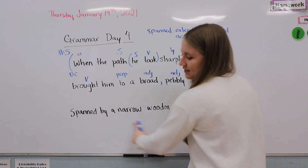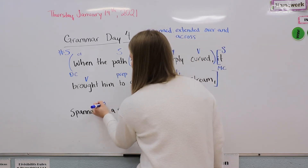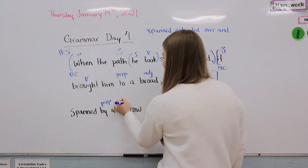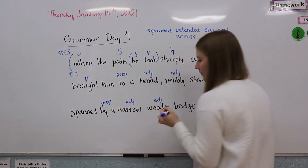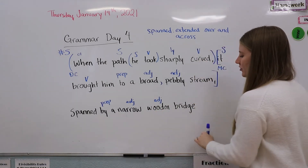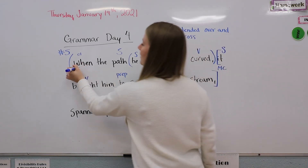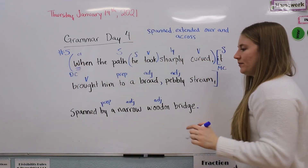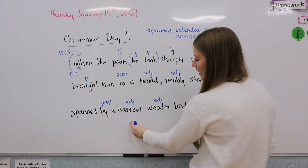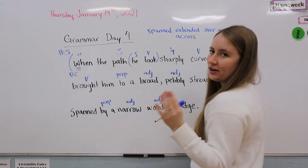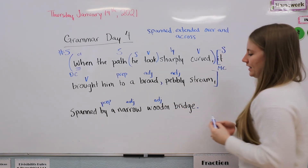Just because this isn't a clause doesn't mean we're not going to deal with it. We also have a preposition 'by,' and then again two adjectives: a narrow wooden bridge. These adjectives — because we need the information that it is first narrow and second wooden — they are cumulative adjectives, so we're not going to put a comma here, because they are each very specific.